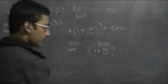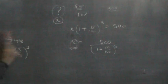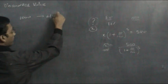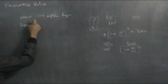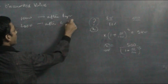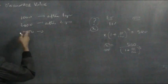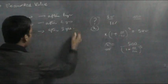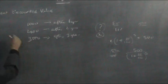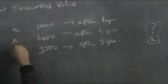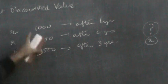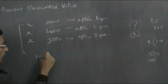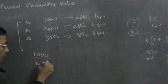The interest rate is 10% for 5 years. Now suppose I have to make a payment of 1000 after 1 year, a payment of 2000 after 2 years, and a payment of 3500 after 3 years. How much money should I deposit now so that I am able to make all these payments? For the first year, I have to pay 1000 at interest rate R, so the present discounted value is 1000 / (1 + R).